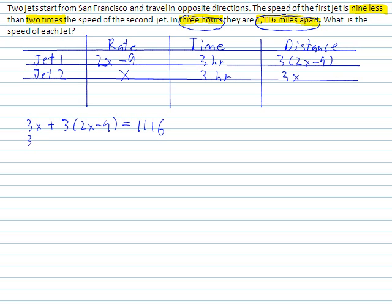Now we can just simplify. 3x plus 3 times 2x is 6x. 3 times negative 9 is negative 27. And that's going to equal 1,116.